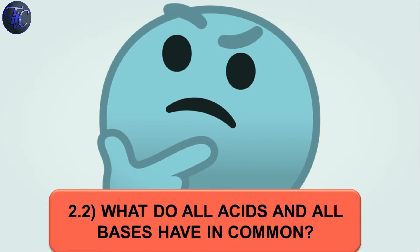So what do all acids and all bases have in common? In section 2.1 we have seen that all acids have similar chemical properties. What leads us to this similarity? We saw in activity 2.3 that all acids generate hydrogen, so hydrogen seems to be common to all acids. Let us perform an activity to investigate whether all compounds containing hydrogen are acidic.